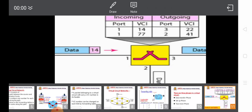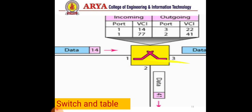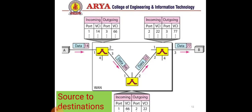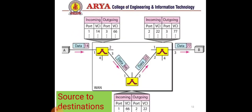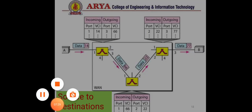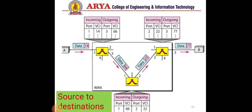Here we have a forwarding table showing source-to-destination data transfer. Port number 1 has data with VC number 14, and its outgoing port is port number 3 with VC number 16. This concludes the data transfer phase, and we will continue in our next lecture with the setup phase and teardown phase.